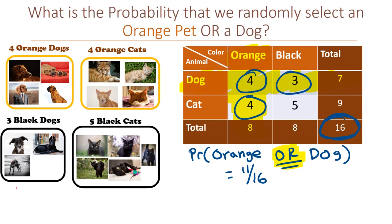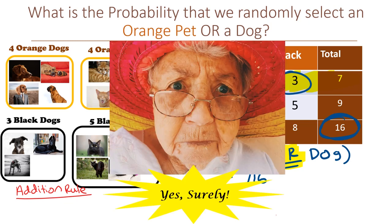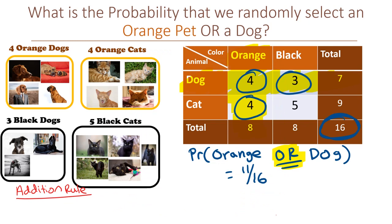If we were to use the addition rule, we would need to first think about whether these events are disjoint or mutually exclusive. Can a pet be both orange and a dog at the same time? Why yes, surely it can. So these events are not disjoint.